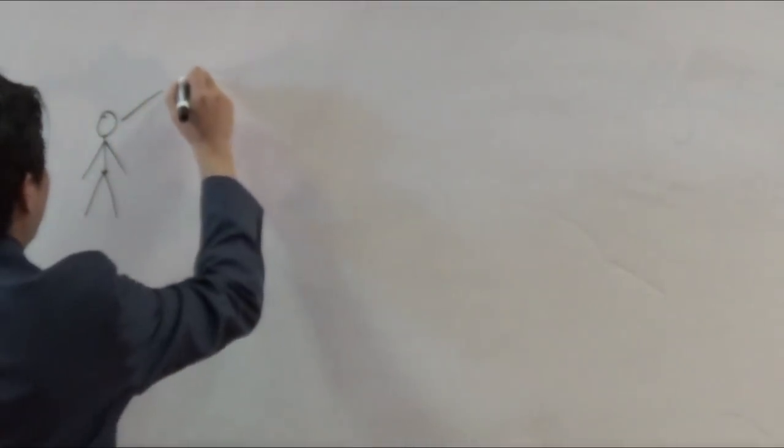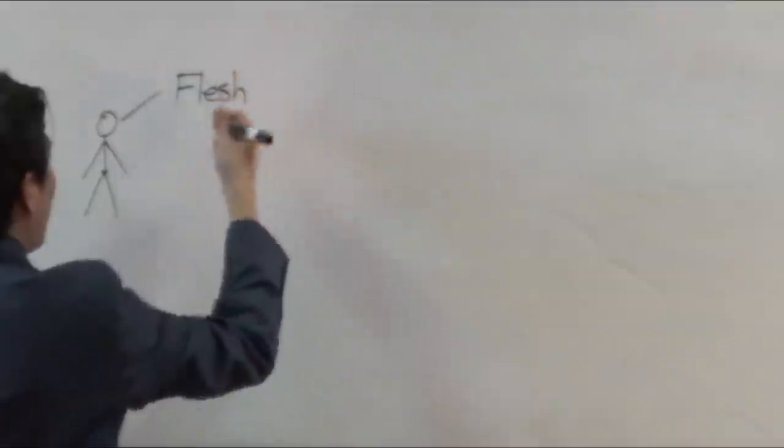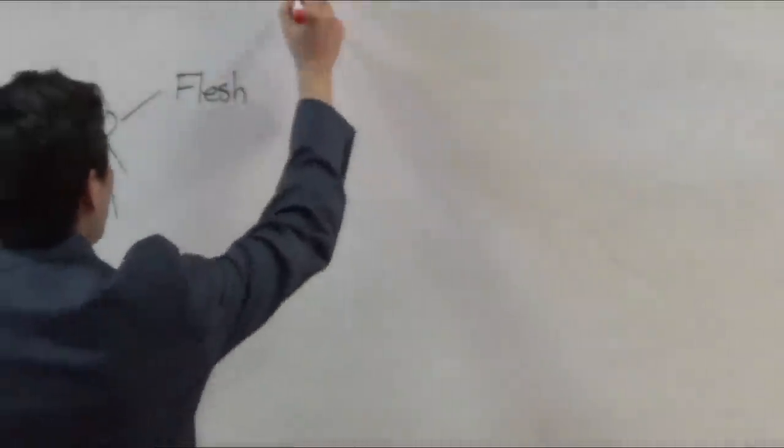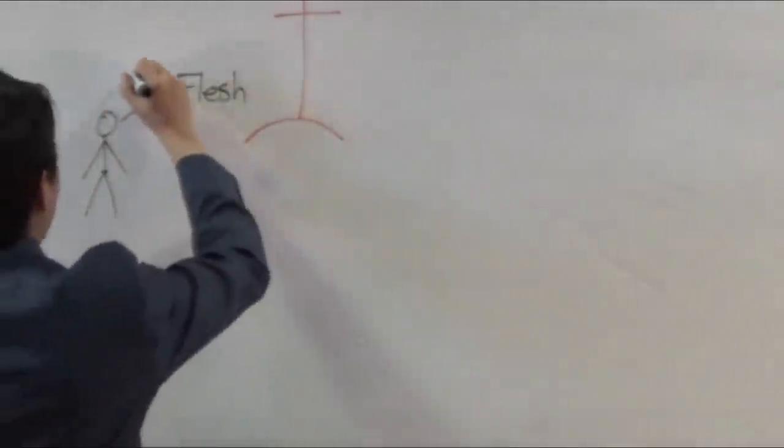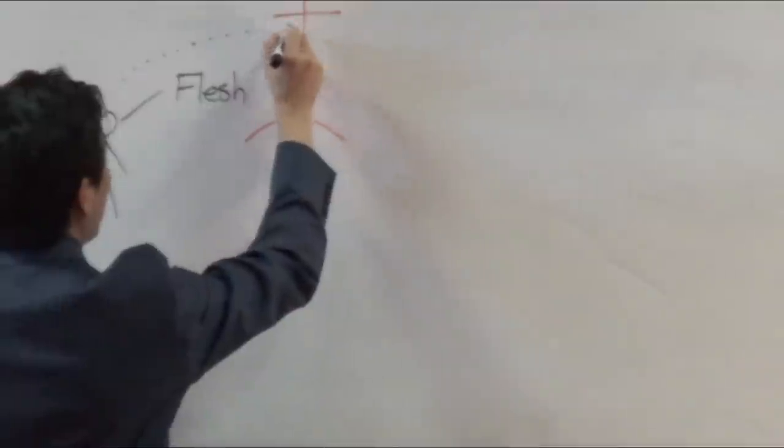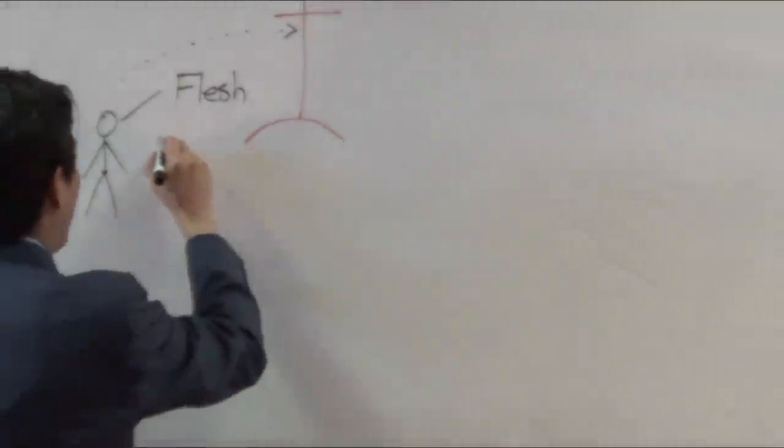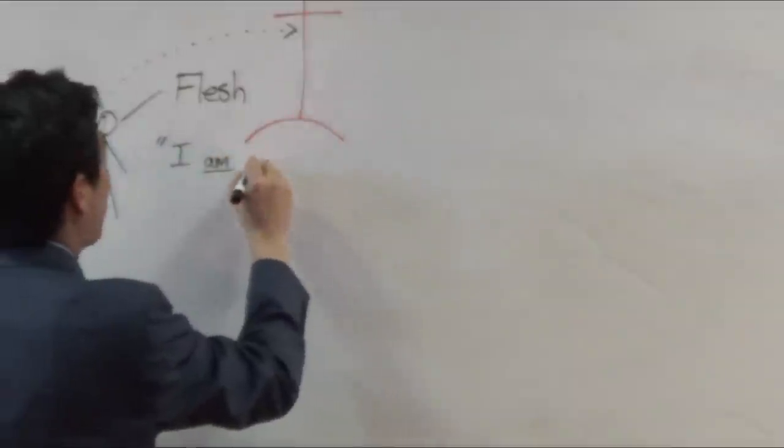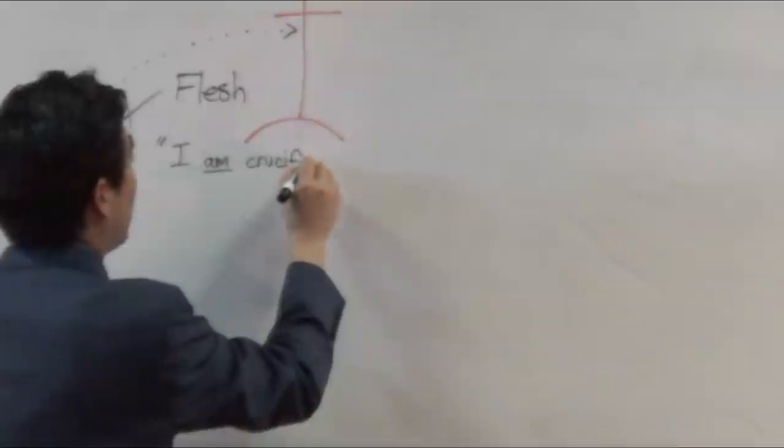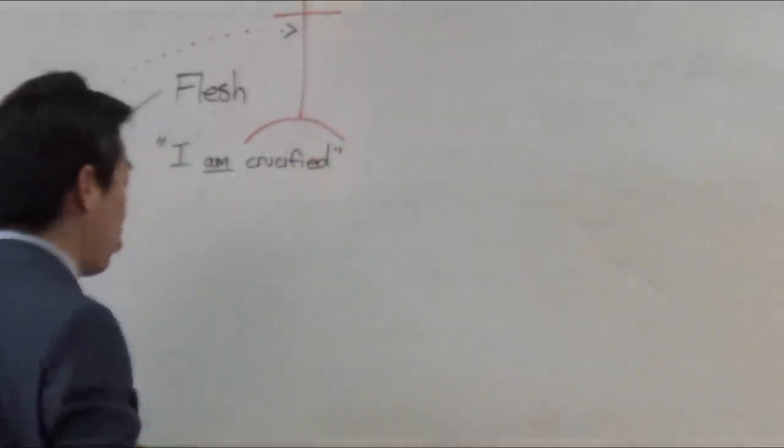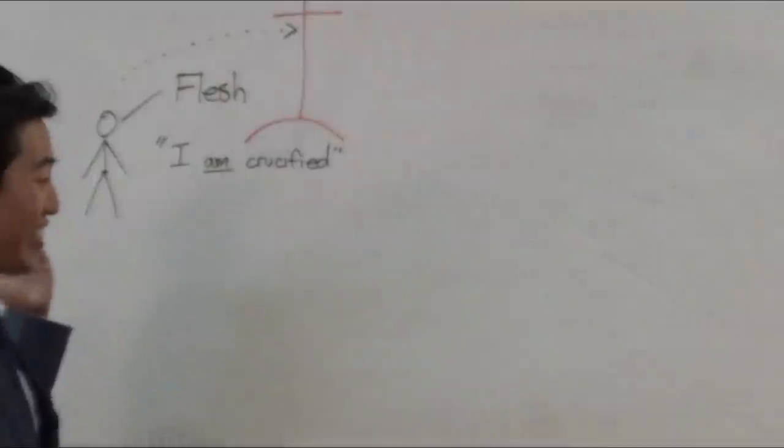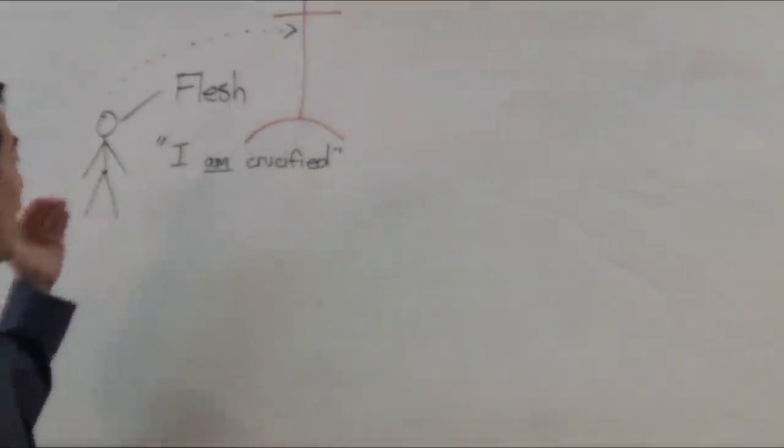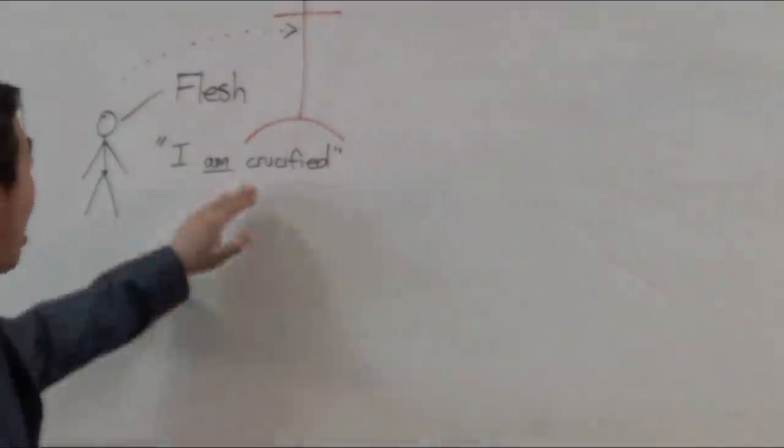So this is us in the flesh. Now, Paul says that we are to be crucified with Jesus Christ. So the life that we live in day after day, we have to assimilate ourselves to this. Kind of like what you heard today at the preaching, right? So notice he says, I what? Am. Is that what he said? So it's present tense. I am crucified. Not in the past.